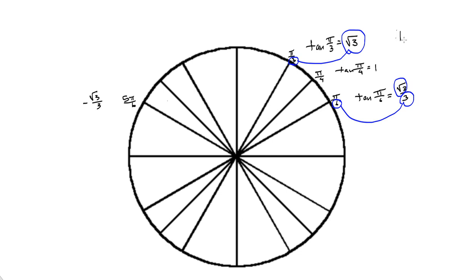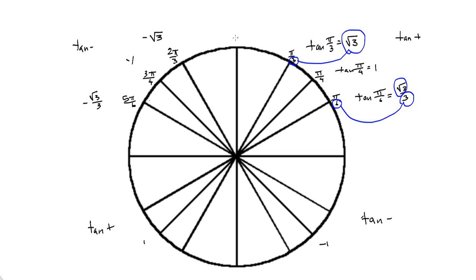Tangents turn out to be positive in quadrant 1, negative in quadrant 2. Since in quadrant 3 we're dividing a negative by a negative, tangents are positive there, and negative in quadrant 4. For the 45-degree multiples within each quadrant, tangents are 1 or negative 1. So the tangent of 3 pi over 4 would be negative 1, and 2 pi over 3 has a tangent of negative radical 3 because it's in quadrant 2 — y is positive and x is negative. I have another video where we talk about the signs of the trigonometric functions, which will clarify that.